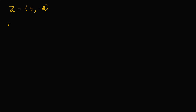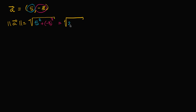Well, if we have this, then the magnitude of A is just going to be — and this really just comes from the distance formula, which just comes from the Pythagorean theorem — the square root of the x component squared, so five squared, plus the y component squared, so plus negative three squared. This is going to be equal to the square root of 25 plus nine, which is equal to the square root of 34.